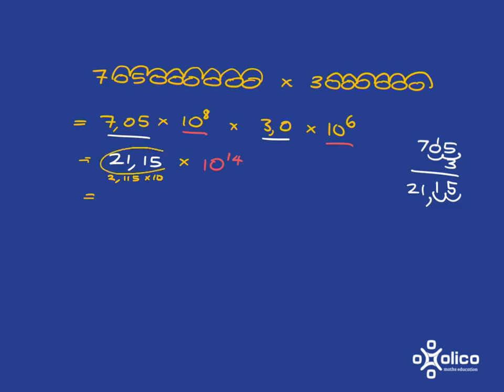So we can replace this by 2.115 multiplied by 10. So what we've got is 2.115 multiplied by 10, and then we've still got our 10 to the 14. And so what we've got is 10 to the 14 and another 10, so that's going to be 10 to the 15. So written nicely in scientific notation, it looks like that.